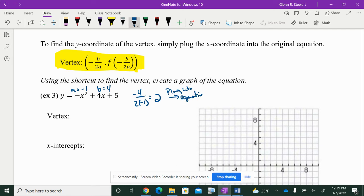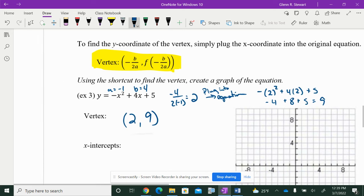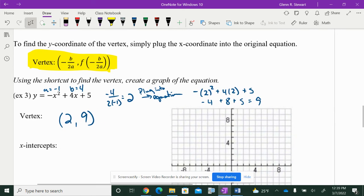And then you take that and plug it in to the equation. So, now we have negative 2 squared plus 4 times 2 plus 5, which ends up being negative 4 plus 8 plus 5, which is 9. So, now I have my vertex of 2, 9. I can do that instead of completing a square if I want to.